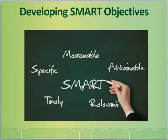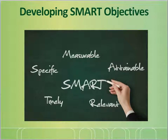Next, let's talk about writing SMART objectives. To write a SMART objective, you should think: Specific, Measurable, Attainable, Relevant, and Timely. Ask yourself: Is my objective specific — what exactly will I accomplish? Is it measurable — how will I know when I've reached this objective? Is it achievable — is achieving this objective realistic with the effort and commitment? Is it relevant — why is this objective significant to the program? And is it timely — when will you achieve this objective?